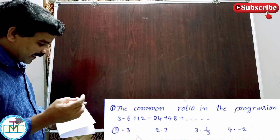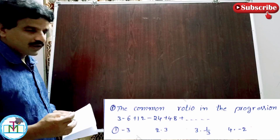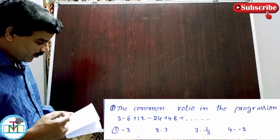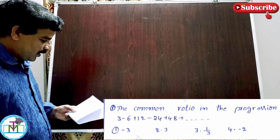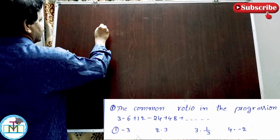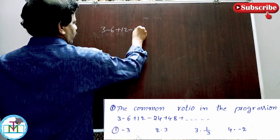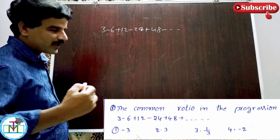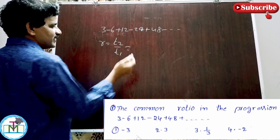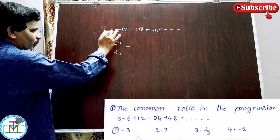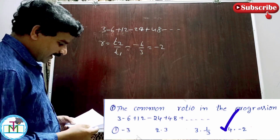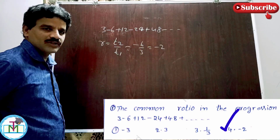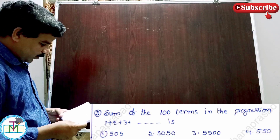Question number 1: the common ratio in the progression 3, minus 6, 12, minus 24, plus 48 and so on. Common difference means arithmetic progression; common ratio means geometric progression. The common ratio R is given by T2 by T1, i.e., second term by first term. Minus 6 by 3 equals minus 2. Likewise T3 by T2: 12 by minus 6 is also minus 2. Therefore option 4, minus 2, is the right answer.